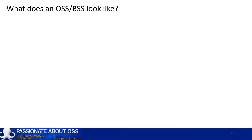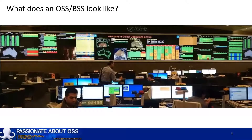You might be wondering what does an OSS or BSS look like? Given these are predominantly operational tools, they're probably most synonymous with a network operations center or a NOC. These are a telco's insurance policy — the nerve center through which the network is monitored and maintained. This picture shows the Telstra NOC. Telstra actually calls it a GOC, or Global Operation Center, but it's really just a fancy name for a NOC.